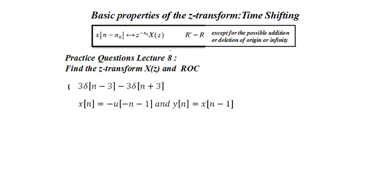Next, I will give you two practice questions. The first question requires applying both the time shifting property and the linearity property — it involves 3δ(N minus 3) minus 3δ(N plus 3). The second question involves the signal X(N) equal to minus U(minus N minus 1), which is an anti-causal signal.